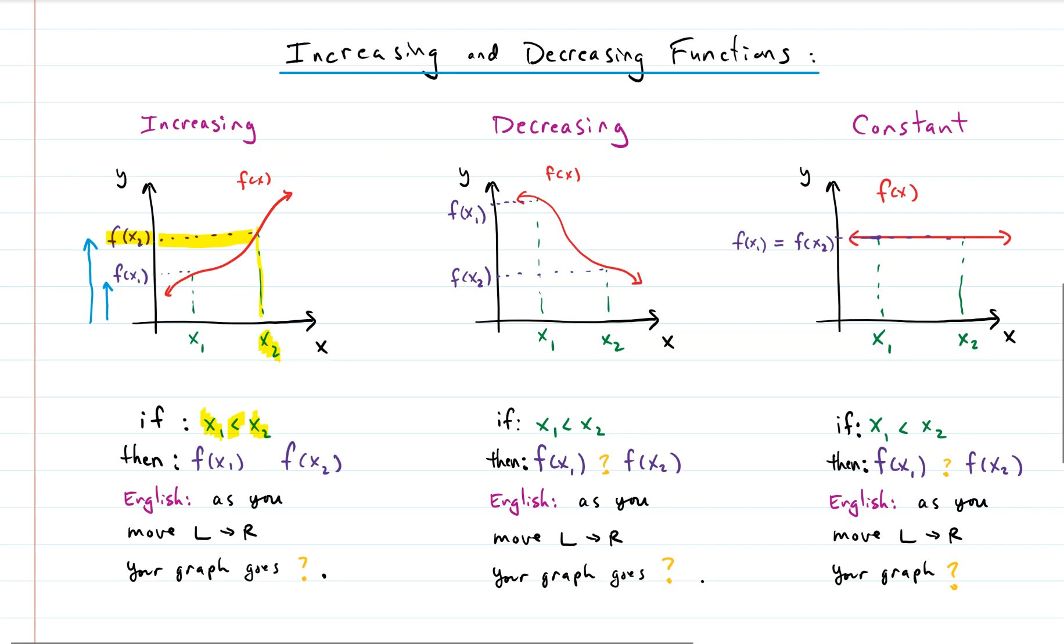We would say that f of x1 is less than f of x2, because it's smaller. So the English version of that is: as you move left to right on your curve - in other words, as we're moving this way on our curve left to right - our graph does what? Our graph goes up.